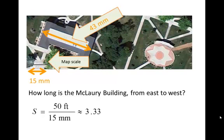And if you're worried about the units, the units are feet per millimeter. Every millimeter on the map corresponds to three and a third feet in the real world. Now that I've got the scaling factor, I can multiply by the length on the map of the building. So 3.33 times 43 is going to get me 143 feet. And so the McClory building is 143 feet long.